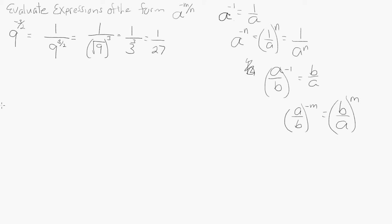Let's try this one. 81 to the negative 3 fourths equals 1 over 81 raised to the 3 fourths. This should be 1 in the numerator.